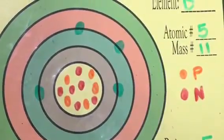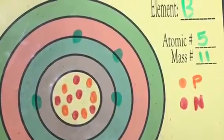Boron 10 has five protons, five neutrons, and five electrons.